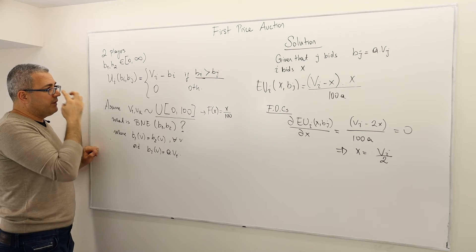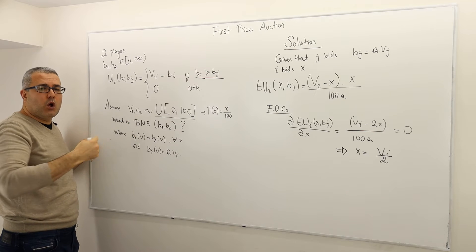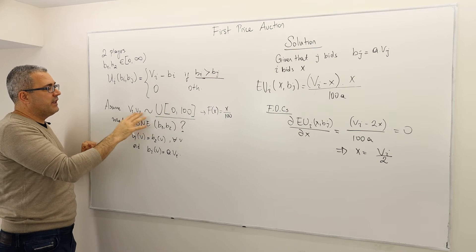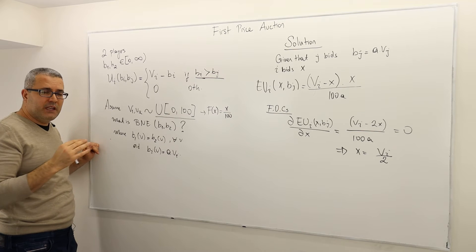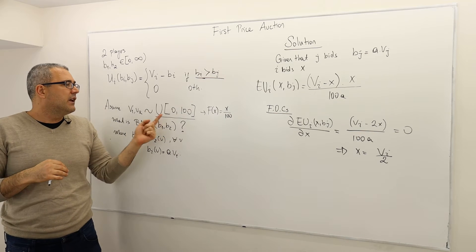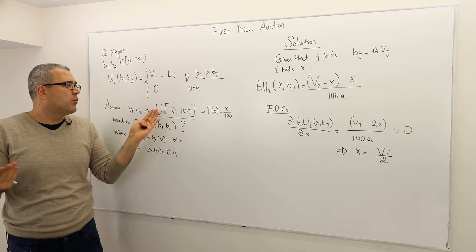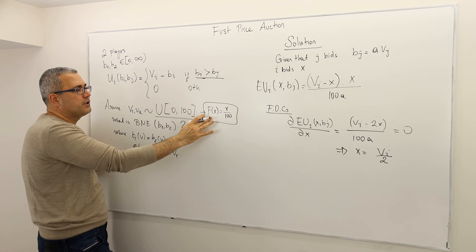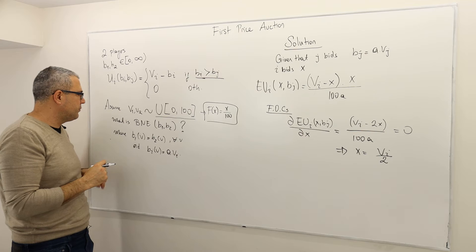We assume that the valuations are private information. Player one knows his own valuation, how much he wants to pay. Player two also knows his own valuation, but they are unsure about their opponent's valuation. They agree that their valuations are drawn from a uniform probability distribution over zero to one hundred. The cumulative distribution function for this distribution is F(x) = x/100. The question is: what are the Bayesian Nash equilibrium strategies — the bids — of this game?